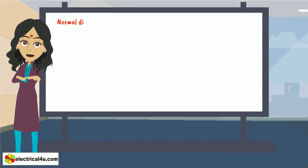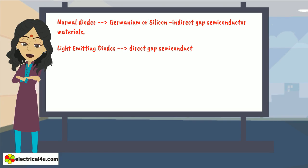Unlike normal diodes, which are made from either germanium or silicon, the indirect gap semiconductor materials, light-emitting diodes are made from direct gap semiconductor, compounded such as gallium arsenide,